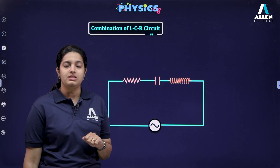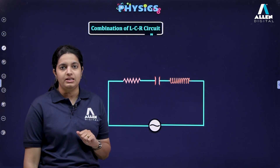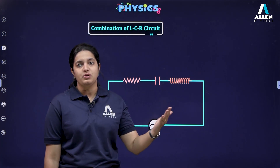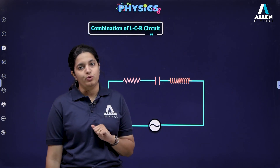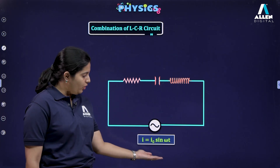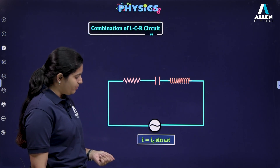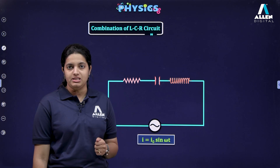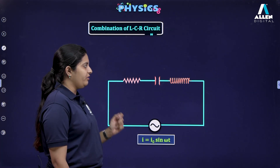In the LCR series circuit, L is the inductor, C is the capacitor, and R is the resistor. We have an alternating source — any current or voltage which varies alternatively from positive to negative in regular intervals of time is known as alternating current or voltage. The alternating source gives out a current which varies with time as i = i₀ sin(ωt), where i₀ is the peak value and ω is the angular frequency.